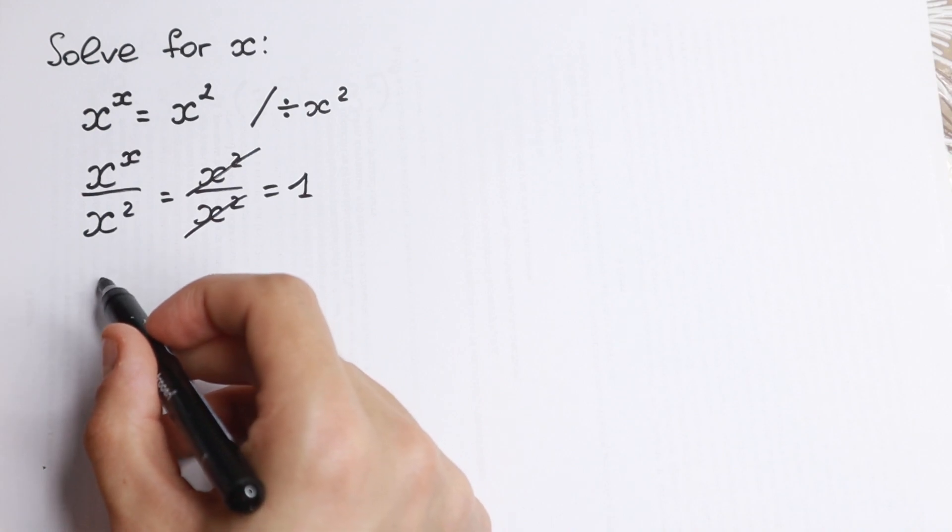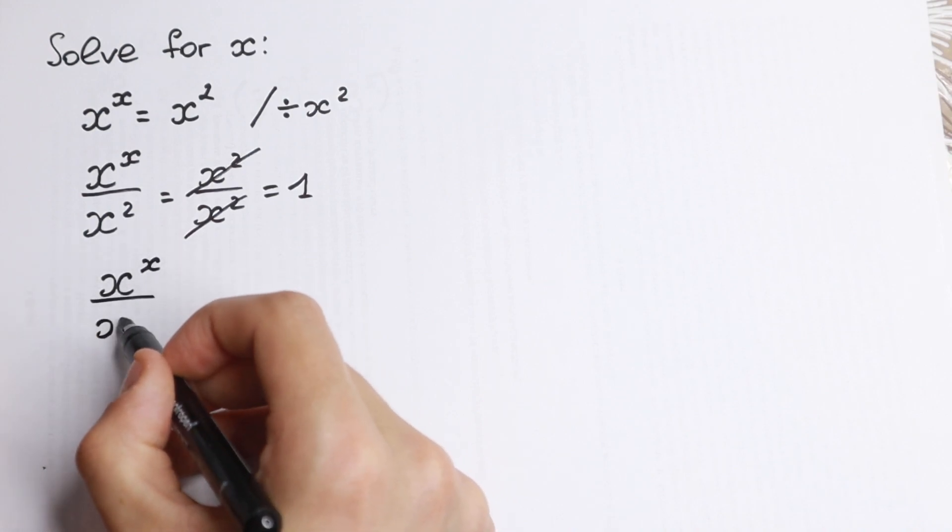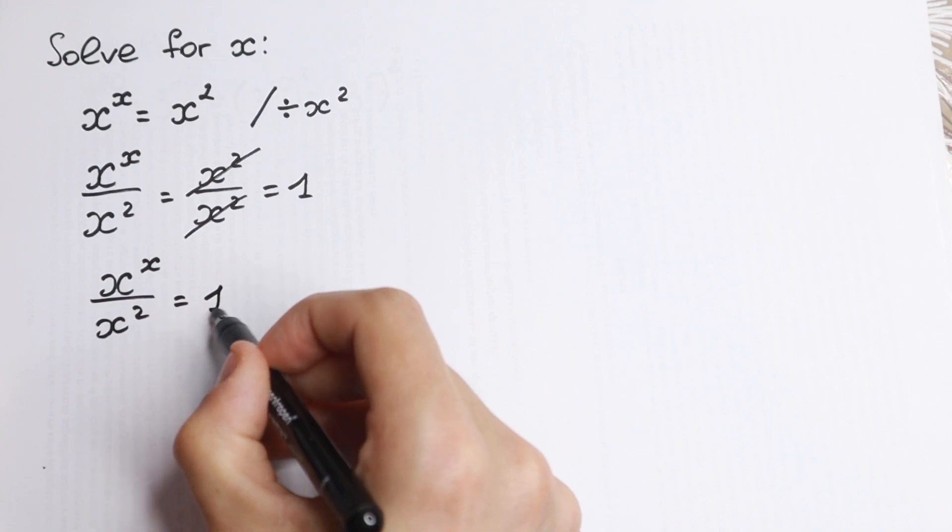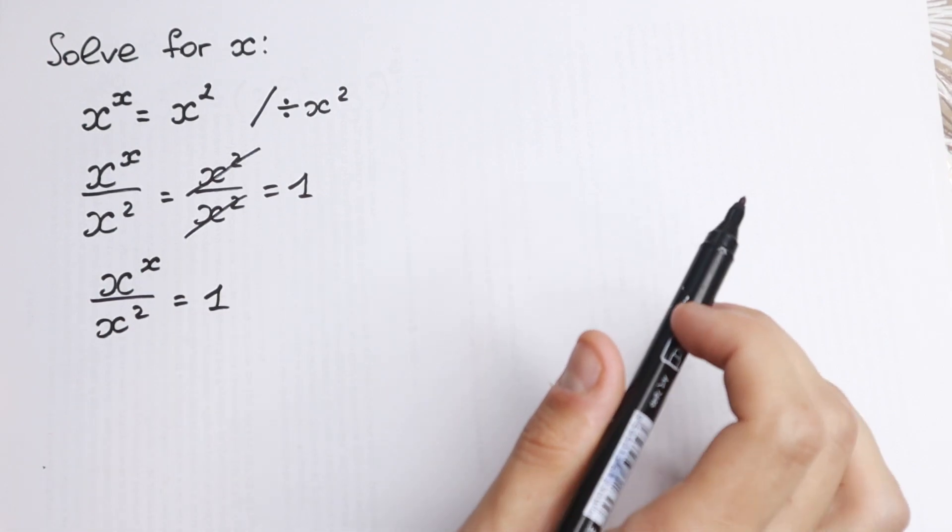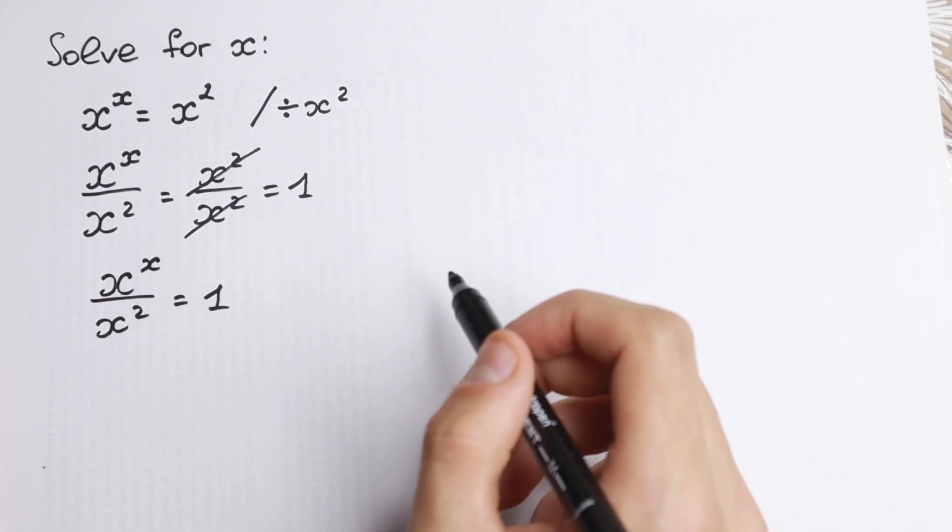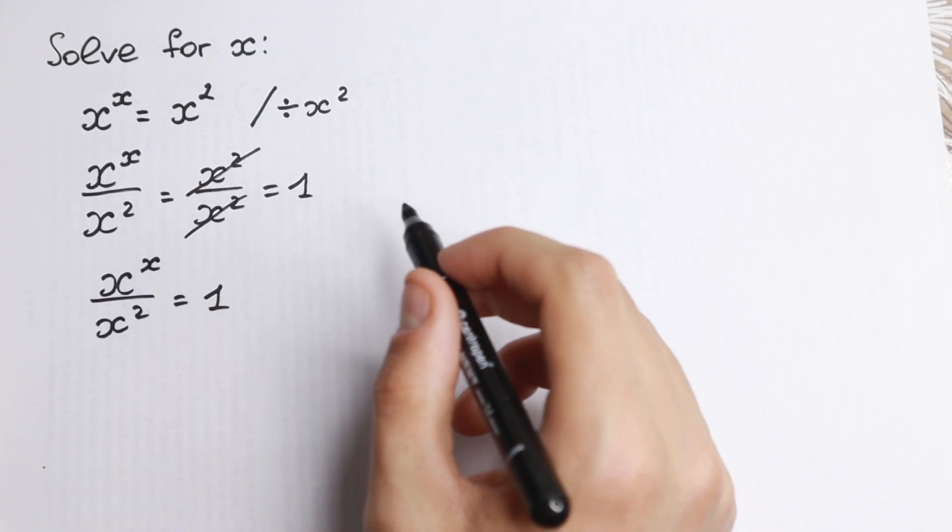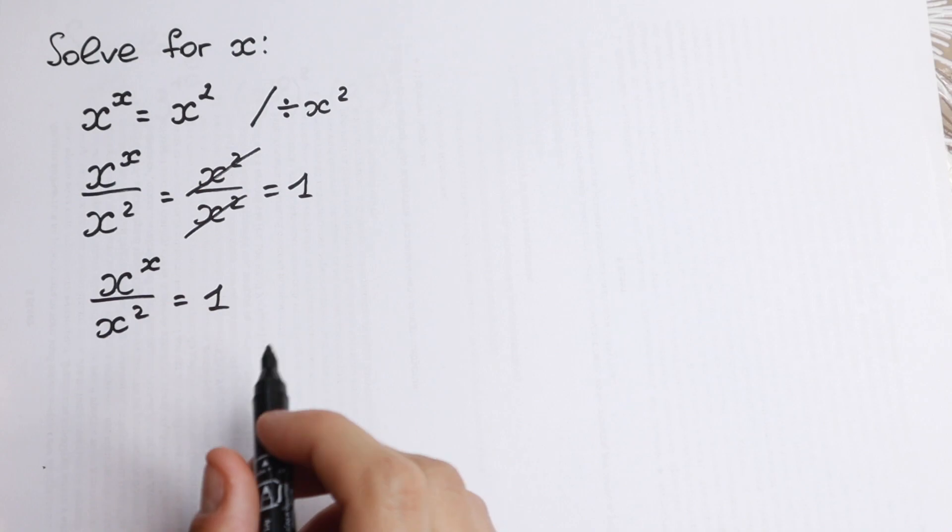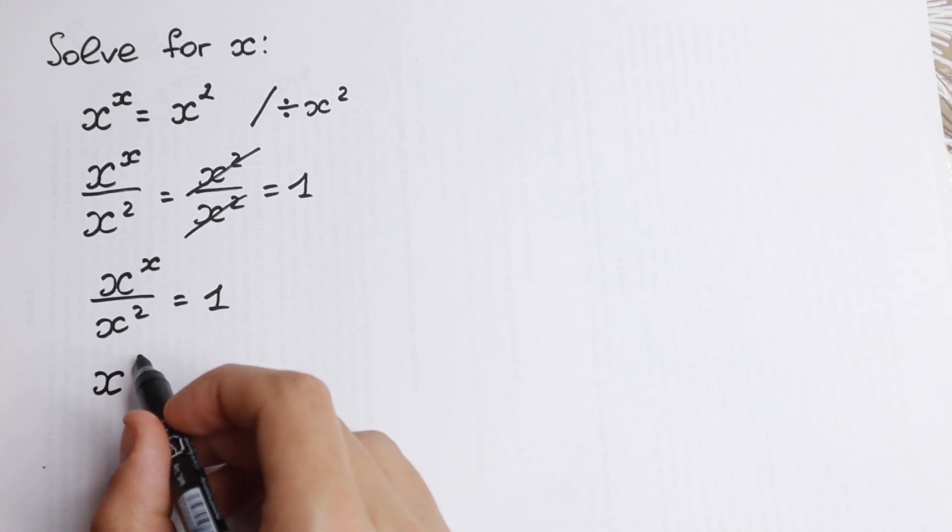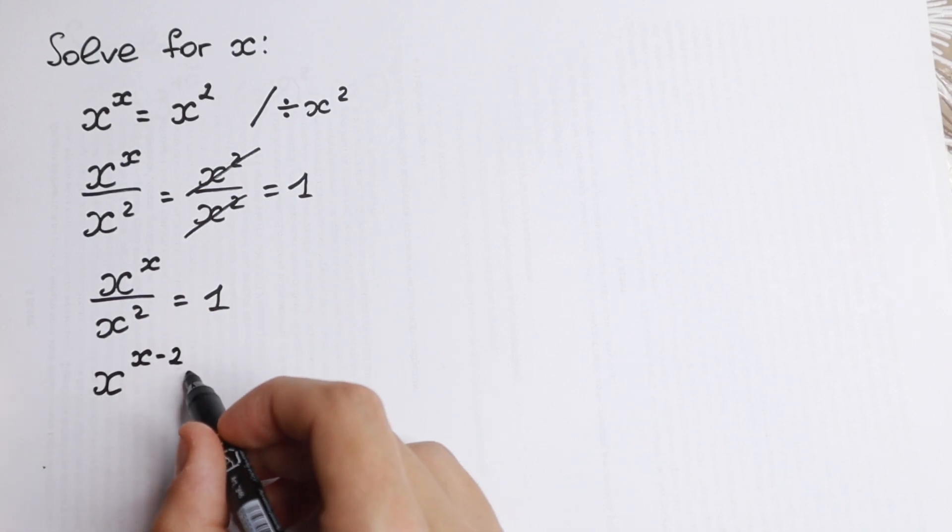So what we will have right now? x to the power x over x square equal to 1. And right now it's really good to apply a property right here because we have the same base and we have different powers but we have a fraction bar. We can easily write it as x to the power x minus 2 equal to 1.